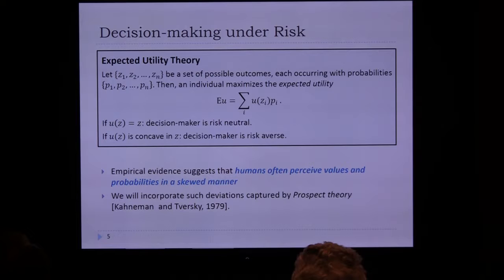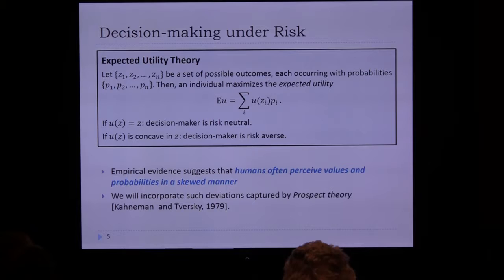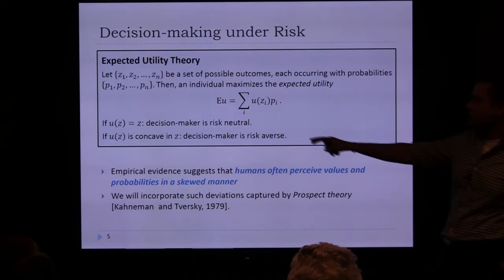The classical way to think about these things is through expected utility theory. Suppose you have some uncertain outcome that could take different values Z1 to Zn, each occurring with probability P1 through Pn. Under expected utility theory, an individual perceives the outcome by shaping the values through some function U, then taking the expected value of U.